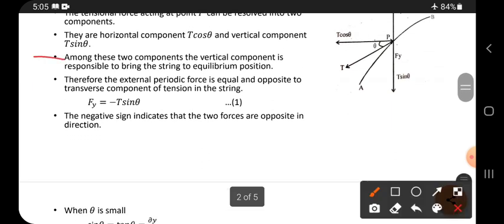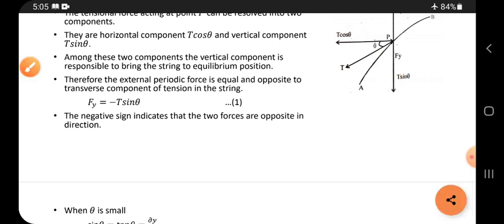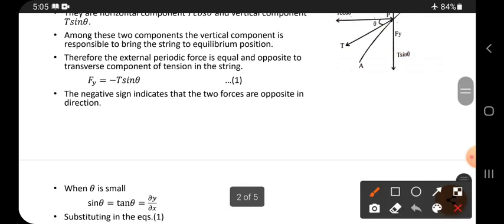Among these two components, the vertical component is responsible to bring the string to equilibrium position. It vibrates up and down, so this force is responsible to bring the string to the equilibrium position along the horizontal direction.